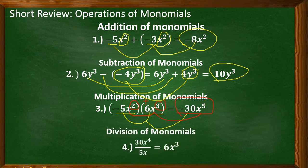For the division of monomials, 30x to the power of 4 divided by 5x. Divide 30 by 5 — the answer is 6. Copy the variable x. Next, subtract the exponents: the exponent here is 4 and the exponent of x is 1, so 4 minus 1 is equal to 3. That is why we have 6x cubed.